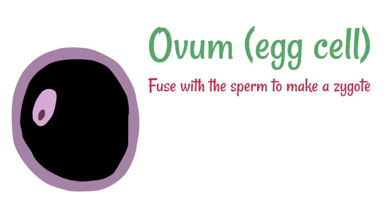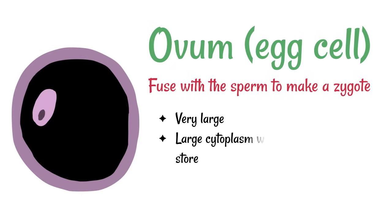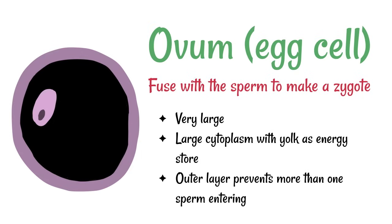Next up is the ovum, which as we've said fuses with the sperm to make a zygote. This cell is particularly large. It's got a large cytoplasm with yolk as an energy store, and it's also got an outer layer that prevents more than one sperm from entering.